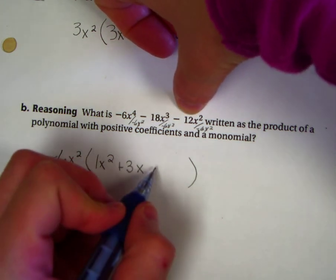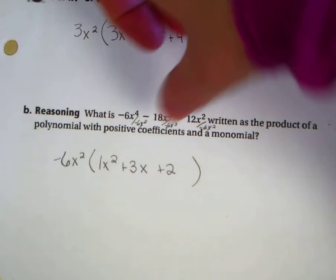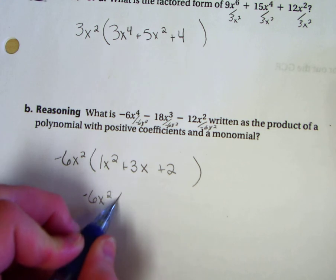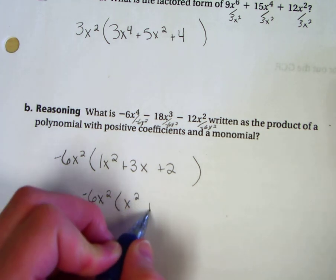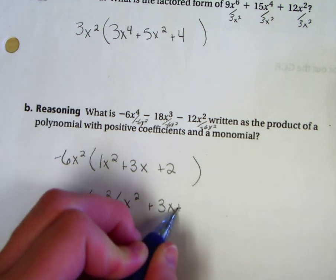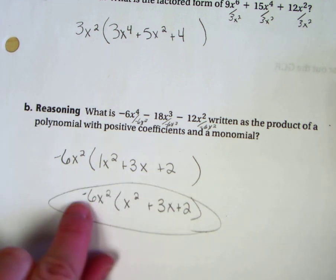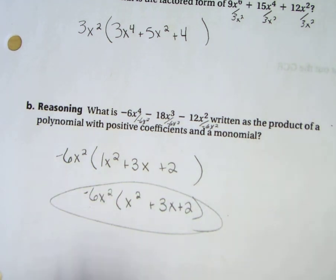Negative 12 divided by negative 6 is a positive 2 with an x left over. This one should get rewritten because we don't like to write a coefficient of 1 if we don't have to. And that's how you write that polynomial with positive coefficients and the outside is now negative.